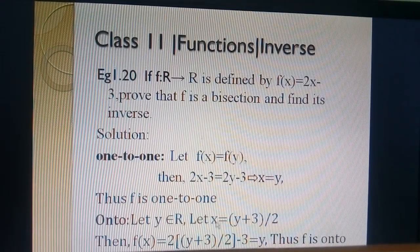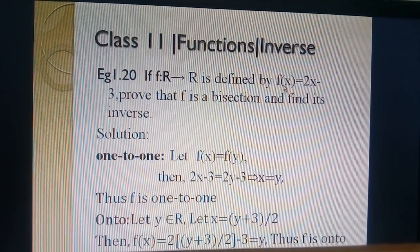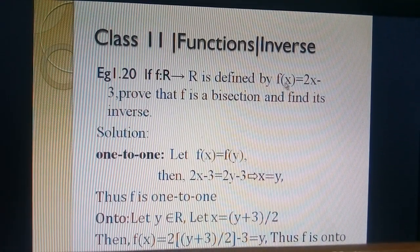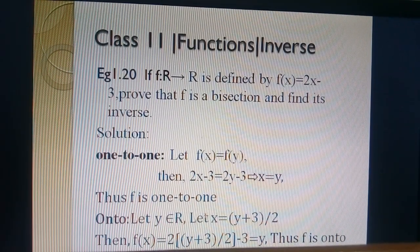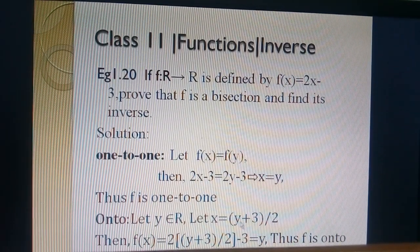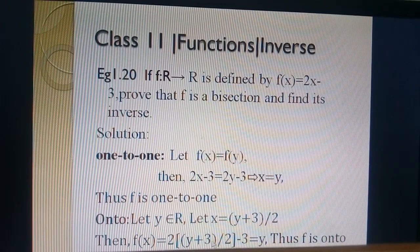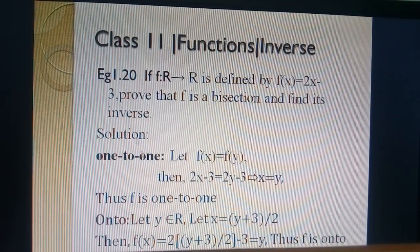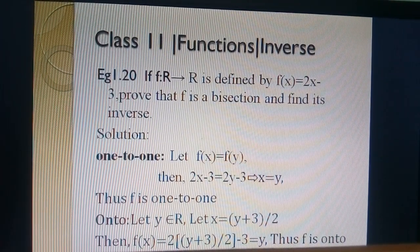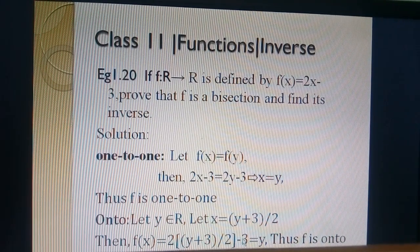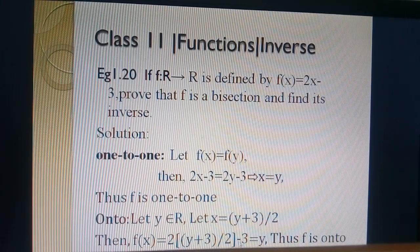We substitute x value into the f(x). So, f(x) = 2 times (y + 3)/2 minus 3. 2 cancels, y + 3 - 3, we get y.